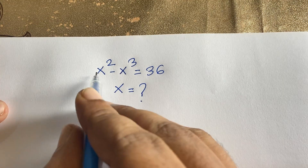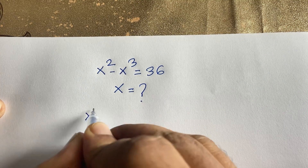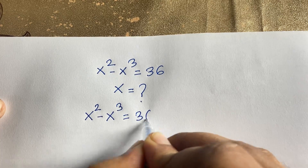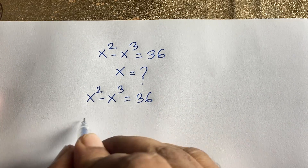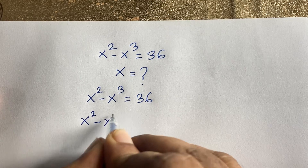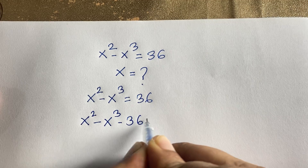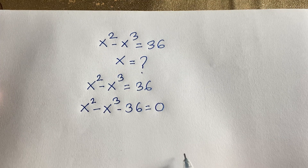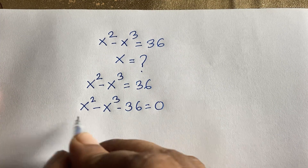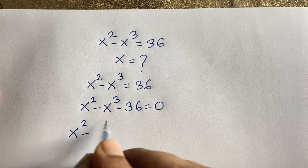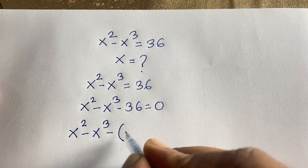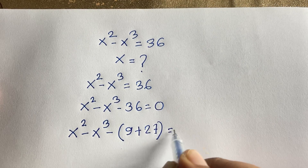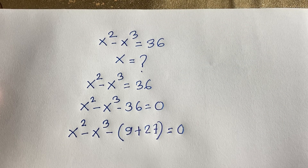First of all, this equation will be x to the power 2 minus x cubed is equal to 36. Then I subtract 36 from both sides, so x squared minus x cubed minus 36 is equal to 0. Now, 36 can be written as 9 plus 27.